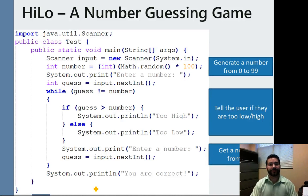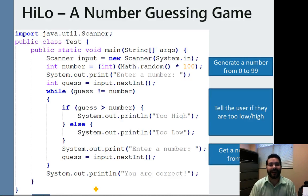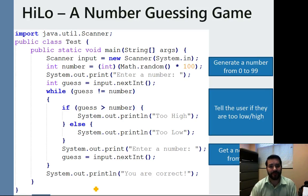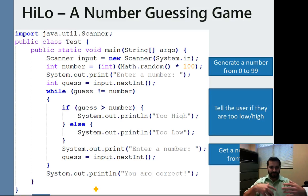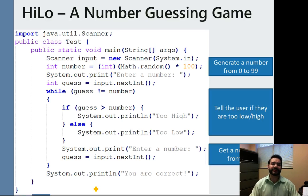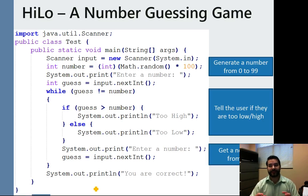So in the time-honored tradition of learning how to program, we developed something known as high-low, a number guessing game. And that's actually why we talked about Math.Random just a second ago, because we can now sort of pile in all these basic structures that we've talked about: loops, conditionals, Math.Random, and getting a user's input.